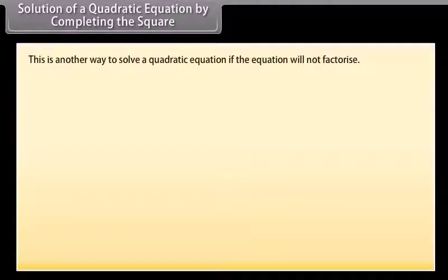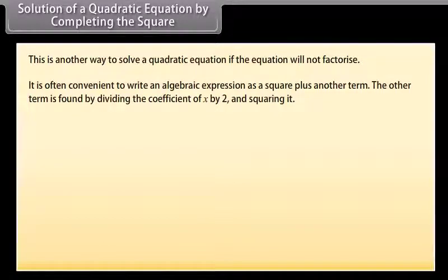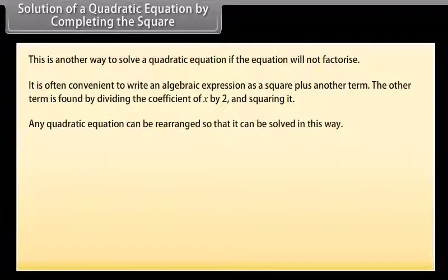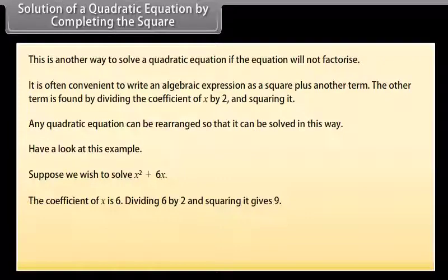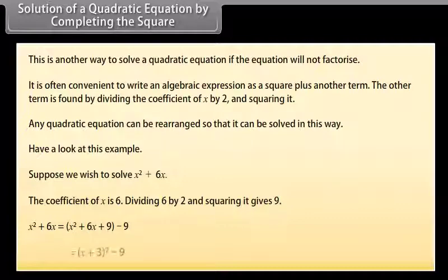Completing the square is another way to solve a quadratic equation when it will not factorize. It is often convenient to write an algebraic expression as a square plus another term. That other term is found by dividing the coefficient of x by 2 and squaring it. For example, rewrite x² + 6x as a square plus another term. The coefficient of x is 6; dividing by 2 and squaring gives 9. So x² + 6x = (x + 3)² − 9.